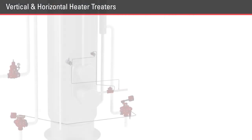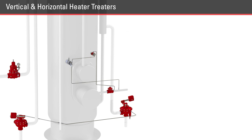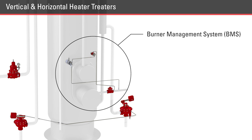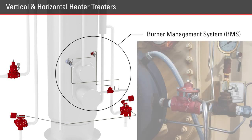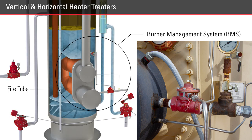Other products shown are often used on both vertical and horizontal treaters: gas back pressure valves, thermostats, and burner valves. All treaters need to have some type of burner management system, or BMS, to control the heat. Keeping a constant temperature in the treater is very important to the separation process — you don't want things to get too hot, but if they're not hot enough, you won't get the separation you need.